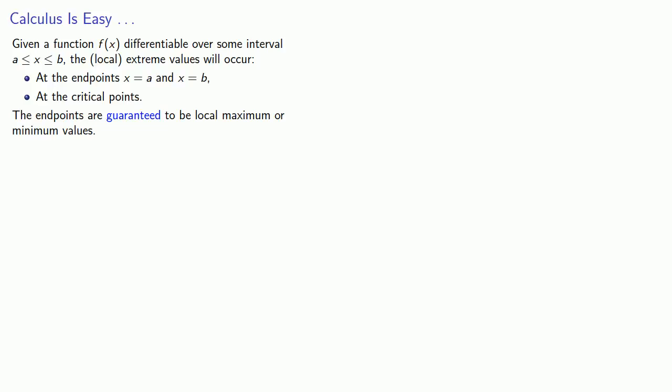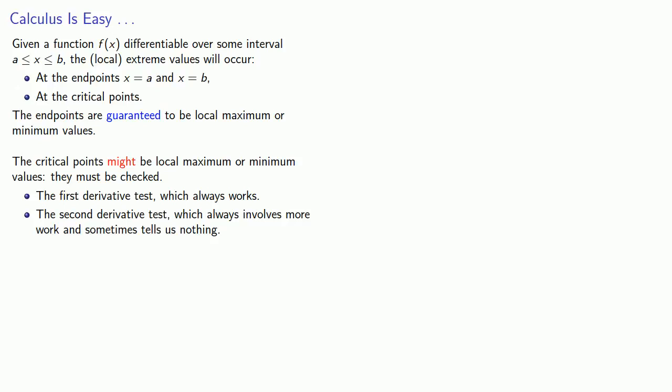The critical points might be local maximum or minimum values. They must be checked, and this is done in one of two ways: either using the first derivative test, which always works, or the second derivative test, which always involves more work and sometimes tells us nothing. Now it turns out that the calculus is the easy part because once you have the function, the calculus itself is easy.